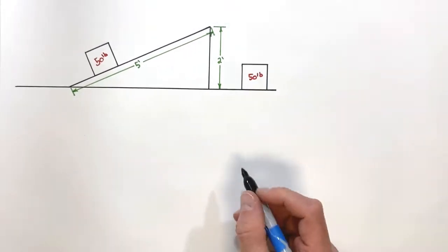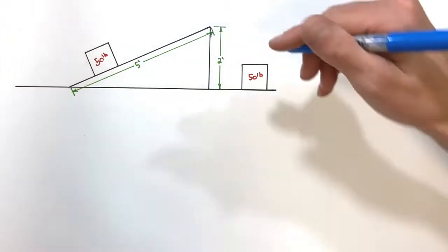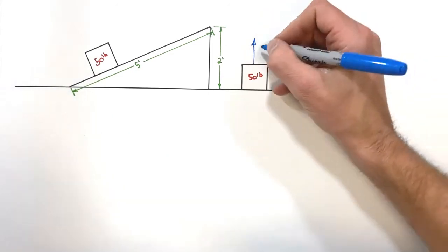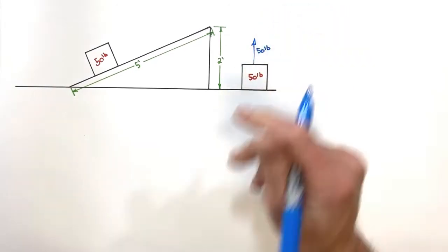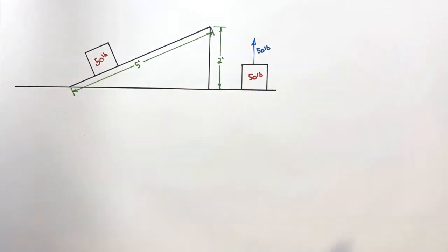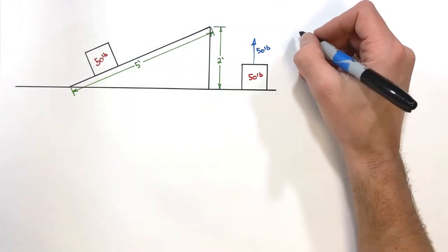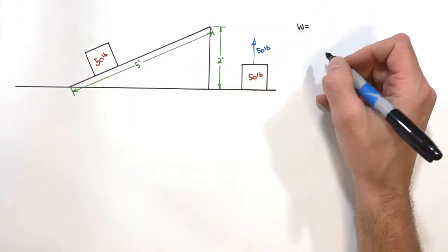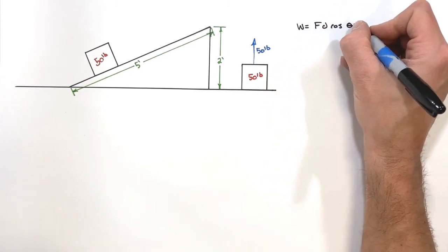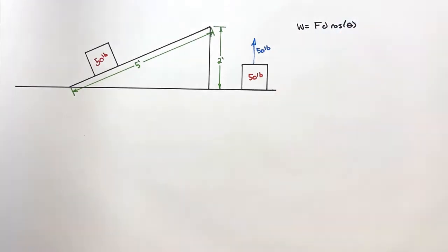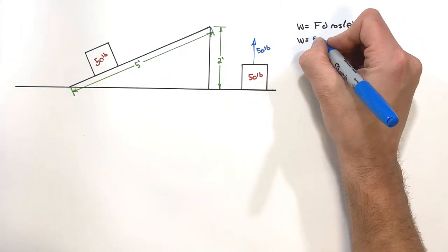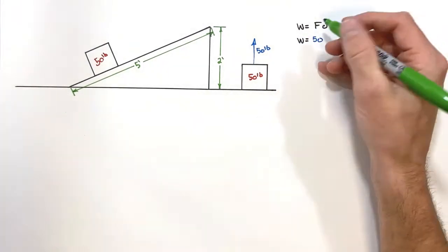The first thing we'll look at is this box — we're just going to lift it straight upward. If this is a 50-pound box, it's going to take 50 pounds of force to lift it. We're going to lift this box upward two feet. Work is given by force times displacement times the cosine of the angle between the two vectors. So work equals 50 pounds multiplied by two feet.